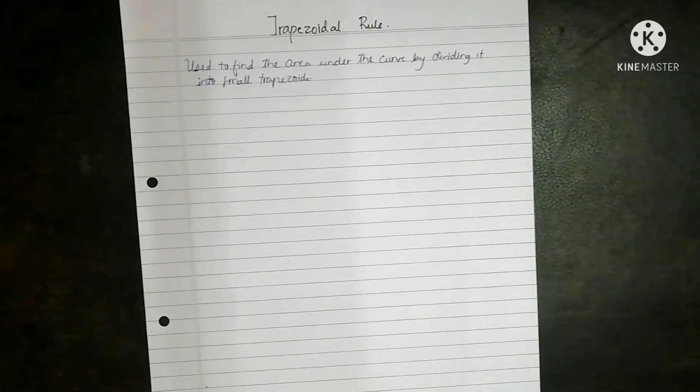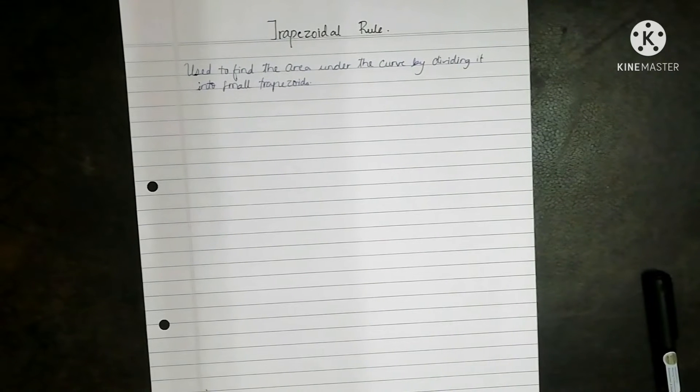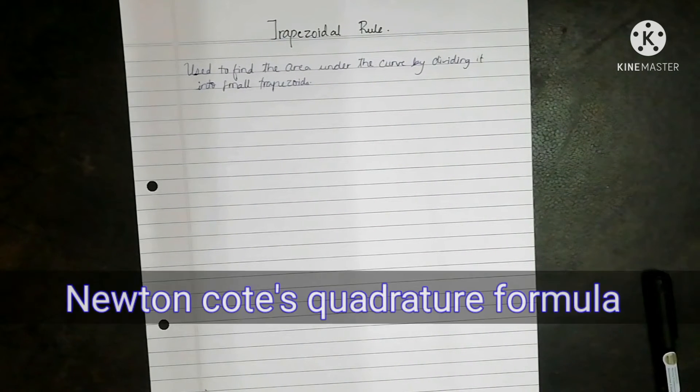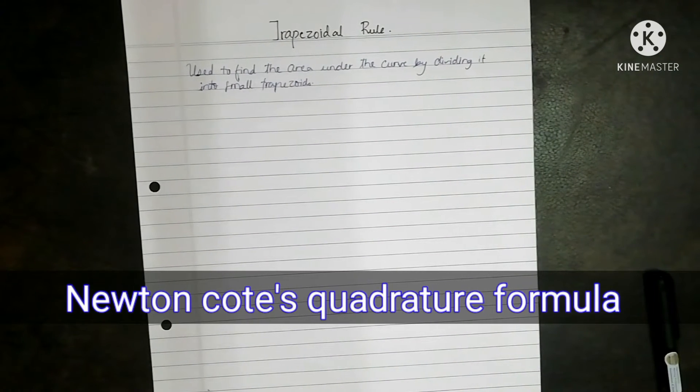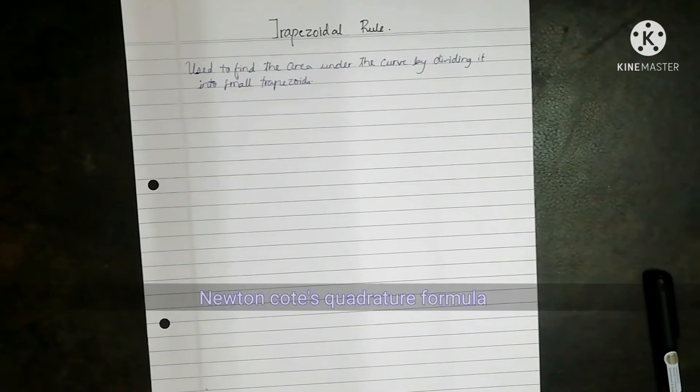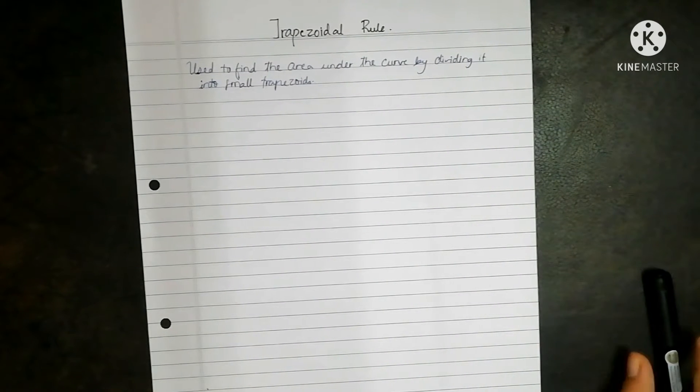Now the formula for trapezoidal rule, Simpson's 1/3rd rule, Simpson's 3/8 rule is derived from a single formula that is Newton's Cotes quadrature formula. Before actually solving the problem, let's have a look at its formula.